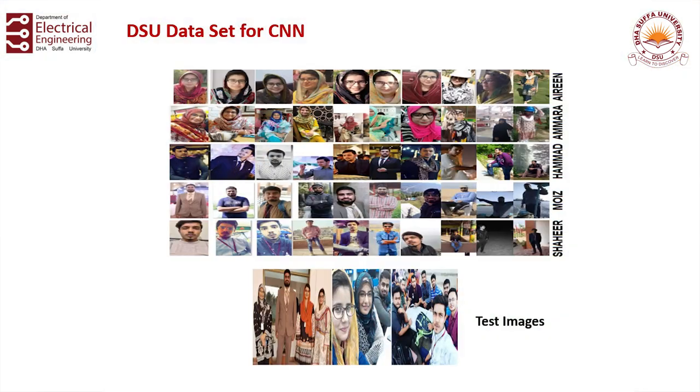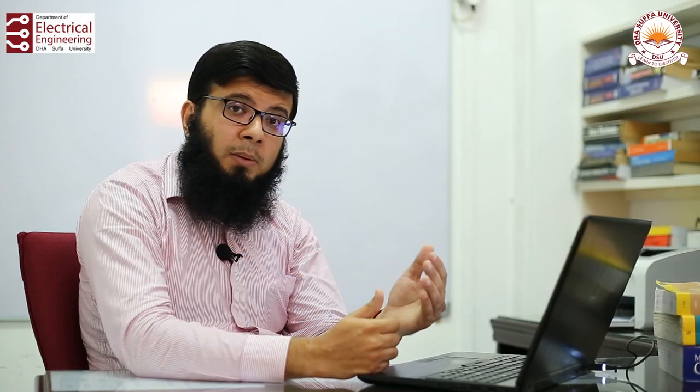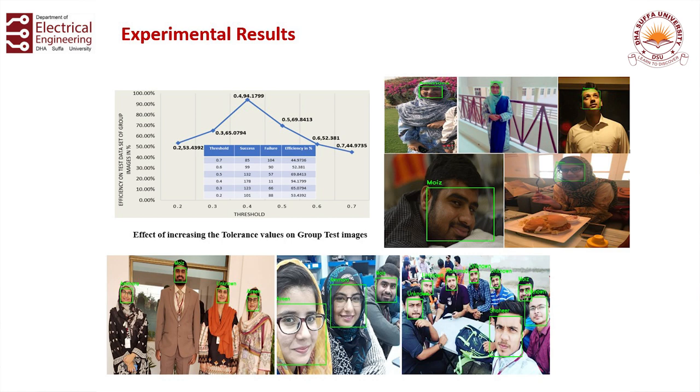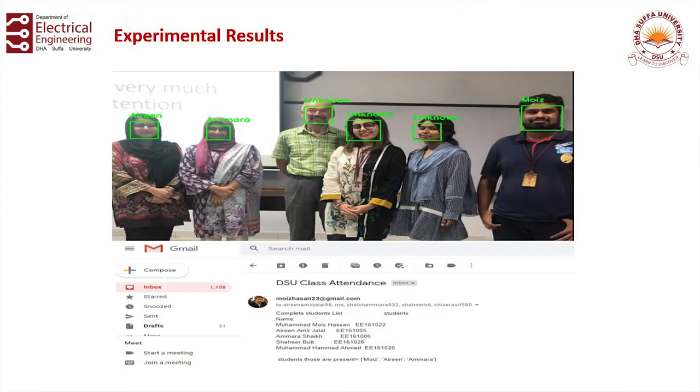We have used datasets including two locally generated datasets from the DSU database. The advantage of this dataset and deep learning is that we can cover more variations, which was not possible with PCA. You can see the different results shown here — successful results once thresholding has been done properly. The hardware implementation has been successfully done on Raspberry Pi, and we also send an email after successful attendance results. Thank you.